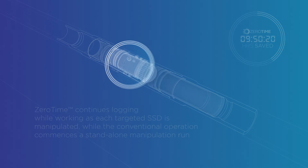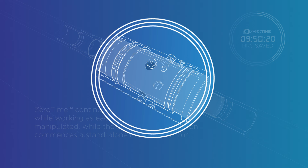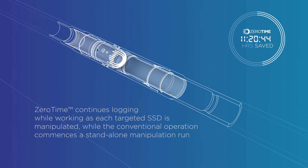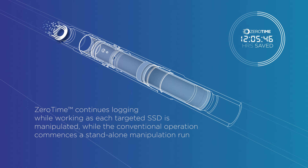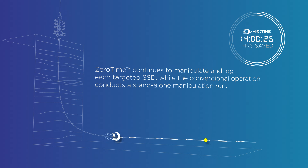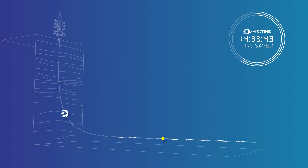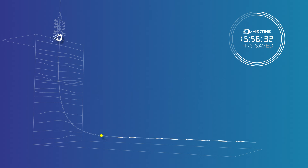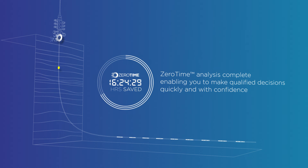The conventional operation is only beginning to rig down after its dedicated logging run. ZeroTime continues logging while working as each targeted SSD is manipulated, while the conventional operation commences a standalone manipulation run. ZeroTime continues to manipulate and log each targeted SSD. The ZeroTime logging while working run is now complete and an analysis of the data is underway. Meanwhile, the conventional operation is still manipulating SSDs on its standalone manipulation run. ZeroTime analysis is now complete, enabling you to make qualified decisions quickly and with confidence.